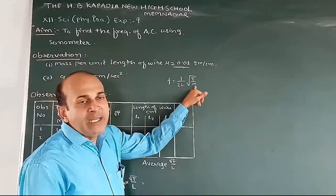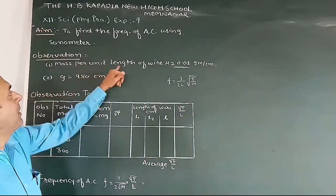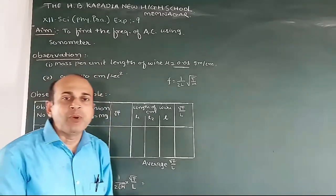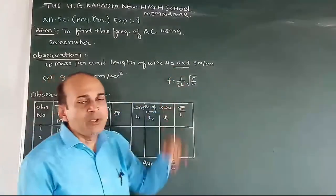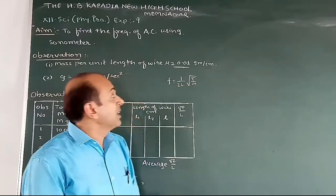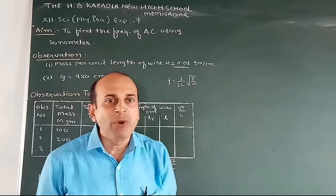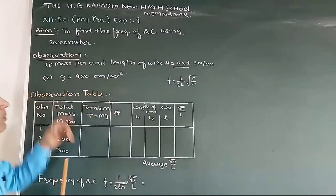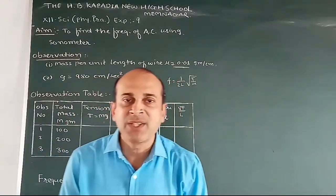Here you will be given mu, that is unit mass per unit length of the wire, which is 0.01 gram per centimeter. Also, one more thing: G is equal to 980 centimeter per second squared.